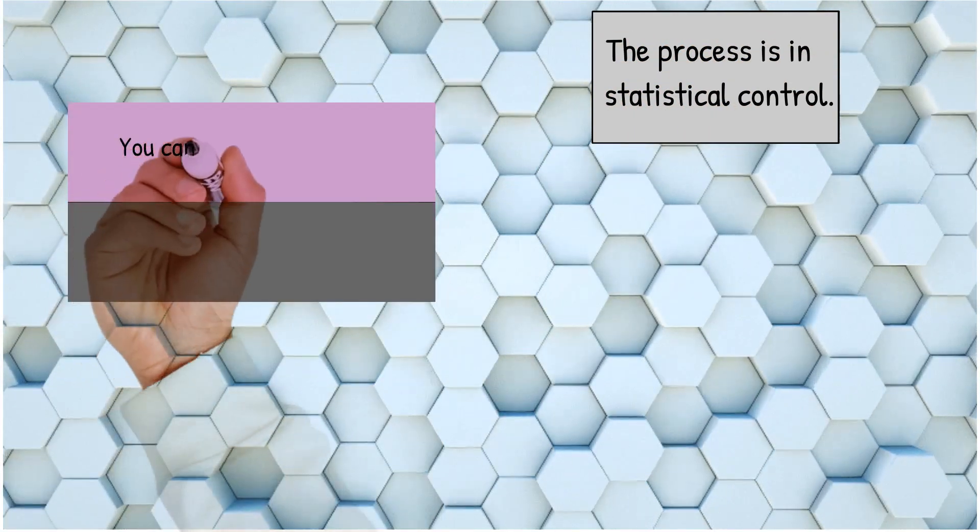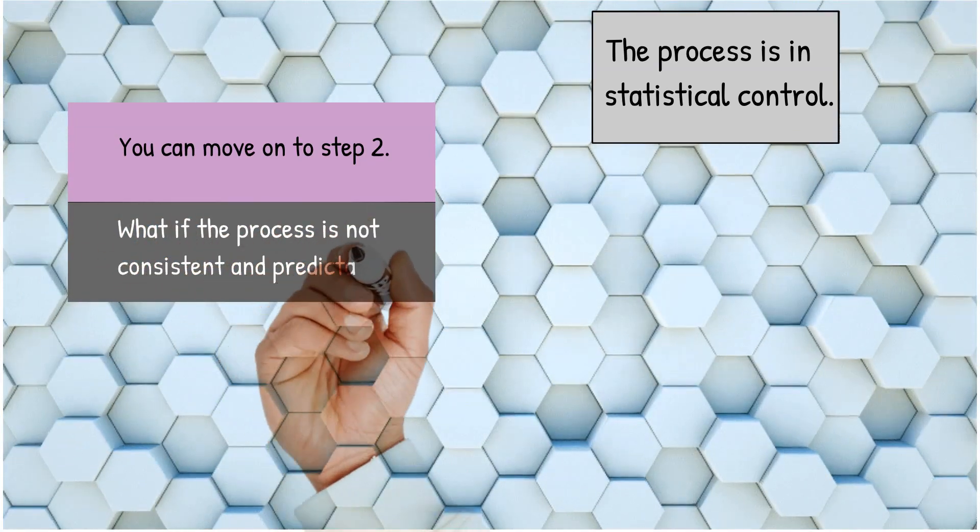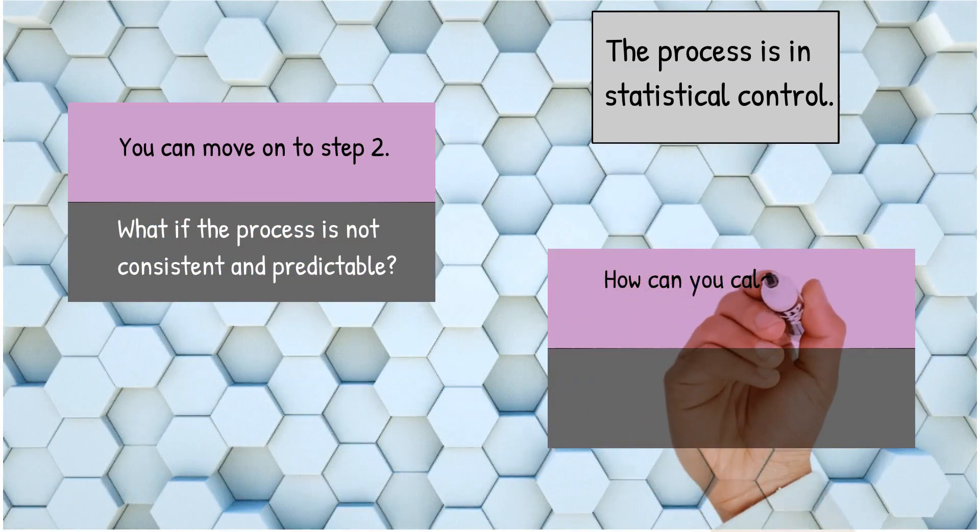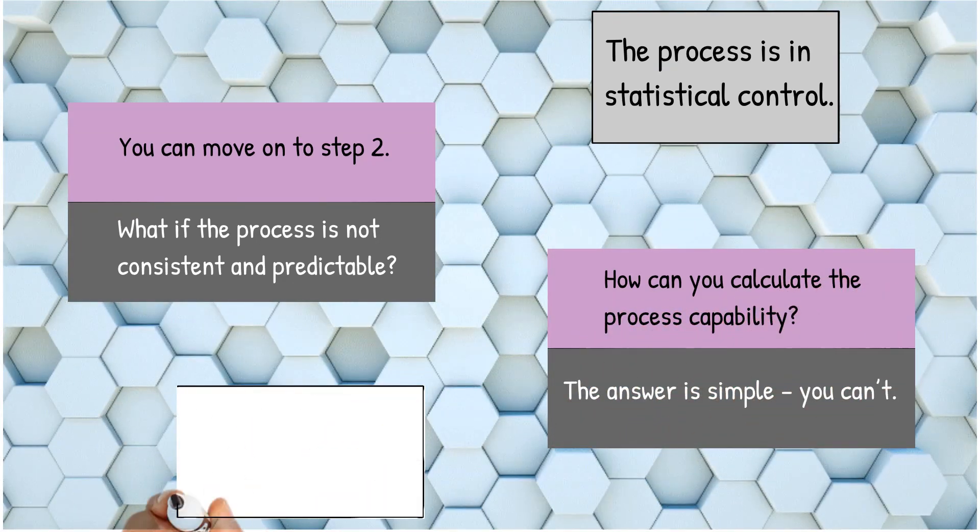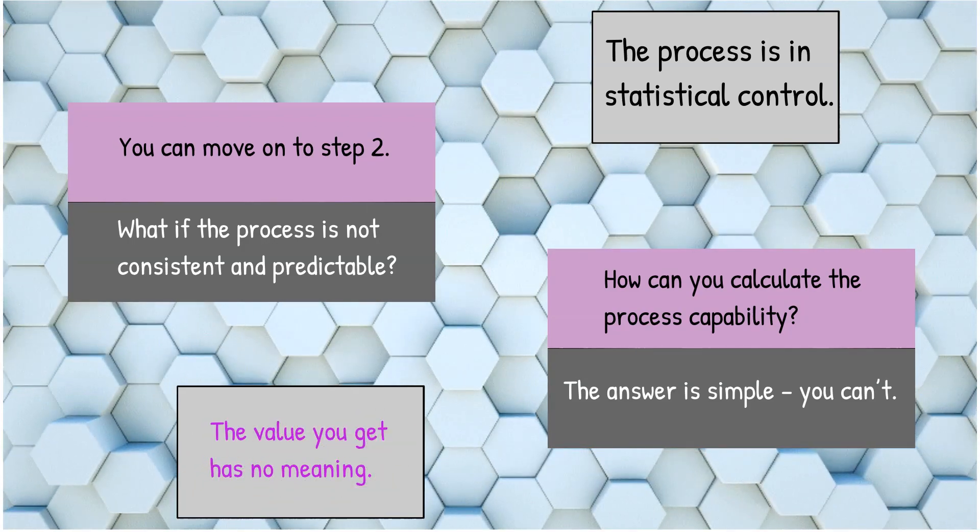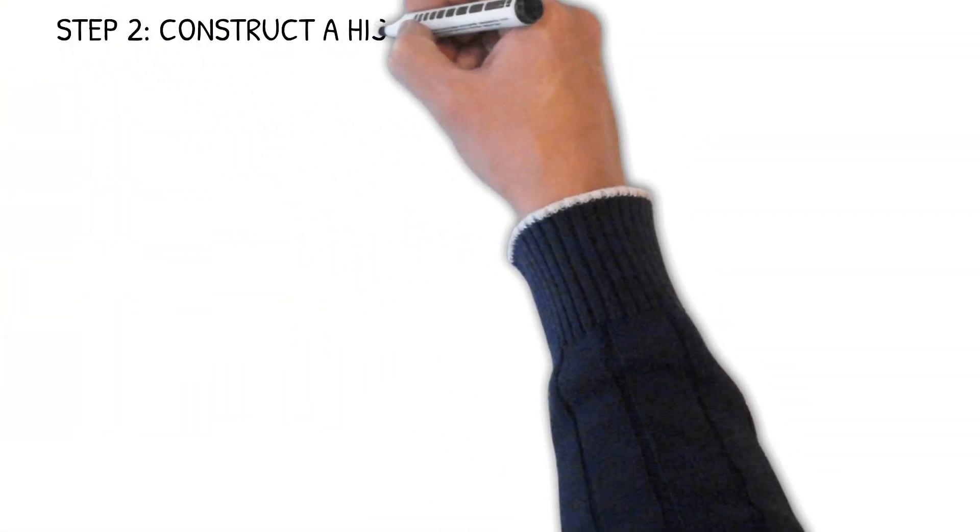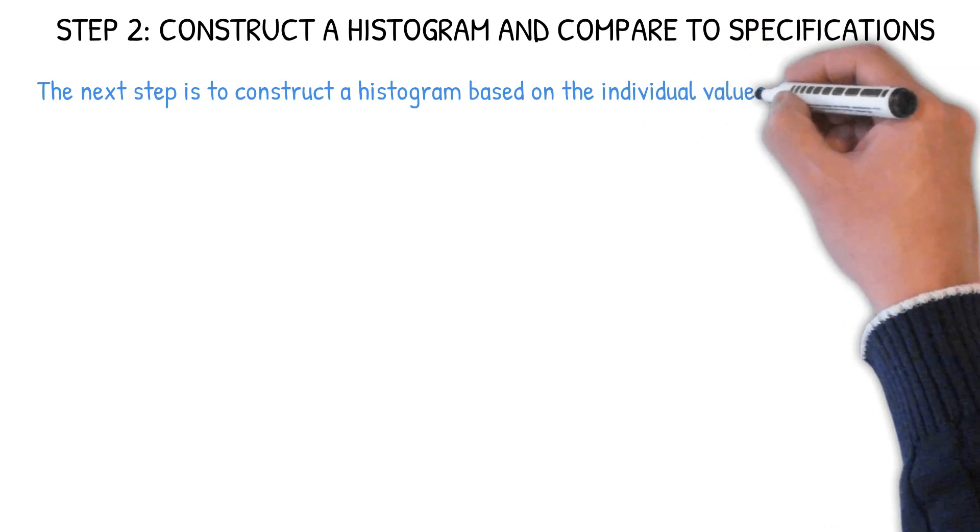Now what happens if your process is not in statistical control? What if it's not consistent and predictable? How do we go about calculating process capability? The answer is simple. You can't. That value has no meaning unless you're in statistical control. But if you're in control, you can move on to step two, where you're going to construct a histogram and compare it to specifications.